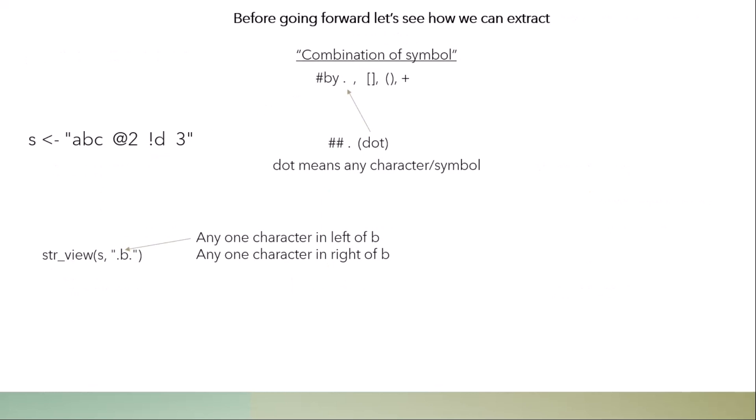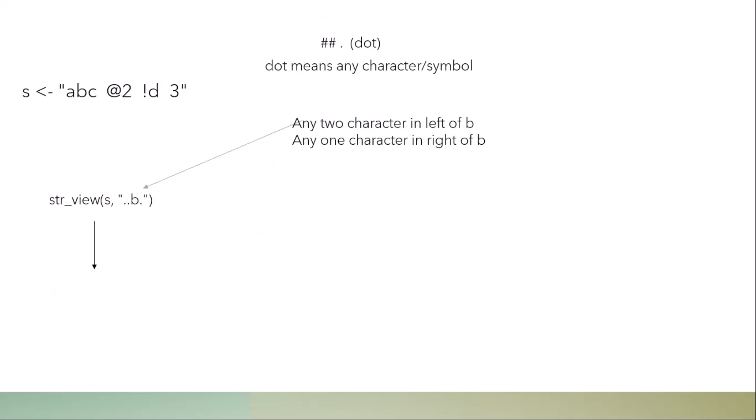The dot means any character or symbol. If I write the regular expression dot B dot, it means: any one character to the left of B, and any one character to the right of B. When you run this command, it returns ABC — because to the left of B there is one character A, and to the right of B there is one character C.